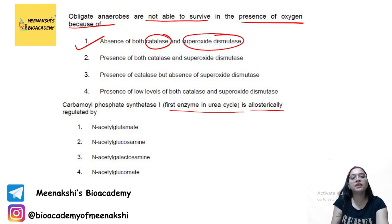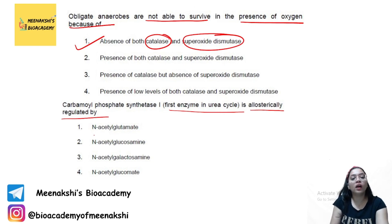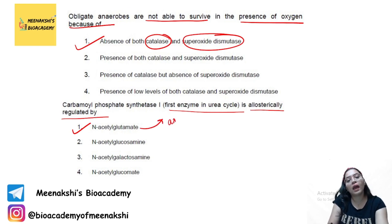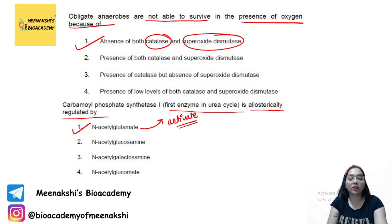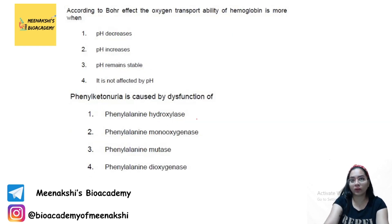Carbamyl phosphate synthetase 1, the first enzyme in the urea cycle, is allosterically regulated by N-acetylglutamate, which activates it. Biochemistry and metabolic processes are very very important topics for this exam.